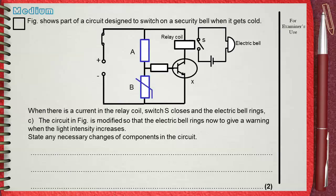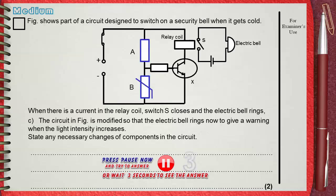The circuit in figure is modified so that the electric bell rings now to give a warning when the light intensity increases. State any necessary changes of components in the circuit. Take your time to think.